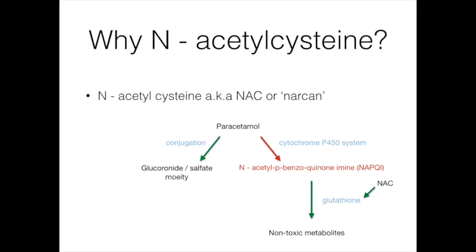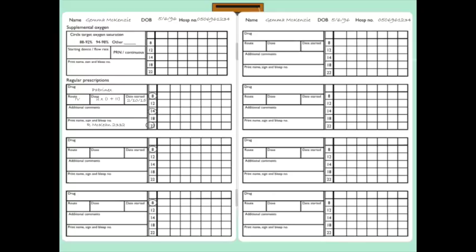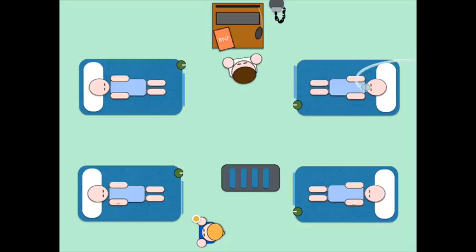Right, so we take off the bloods and we prescribe the Pabrinex and diazepam as per CIWA. We ask the nurse to send off the urine sample and then we get the bloods back. Take a minute now to go over them.